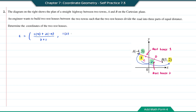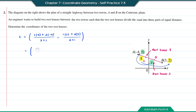And 1 times 2 plus 2 times 5 divided by the total ratio. So this will equal negative 3 divided by 3 and 12 divided by 3. Simplifying, you will get negative 1 and 4. So that will be the coordinate of point C.